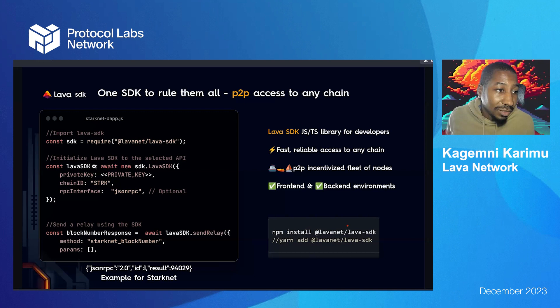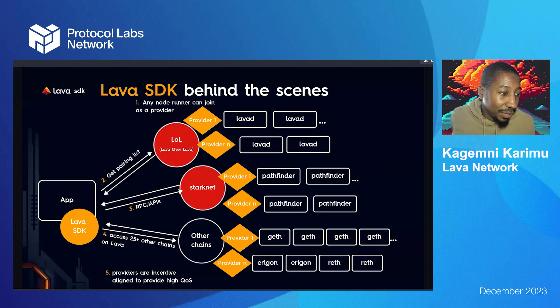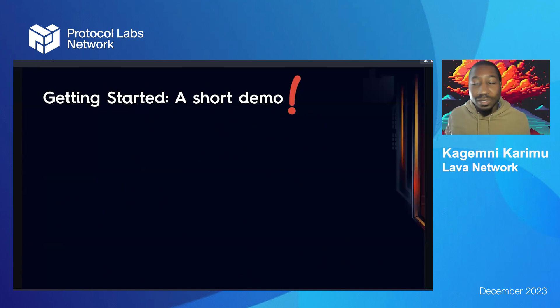Here's an example with StarkNet JSON RPC. You can see that the SDK is initialized, and then a block number response call is made using lavastk.sendrelay. This is available on NPM — lavanet/lava-sdk. Behind the scenes, it's sending the request to the fastest of several providers that it queries the Lava blockchain to find, and the request gets sent.